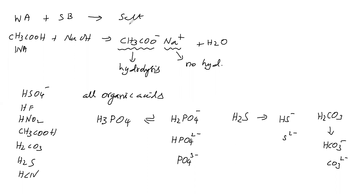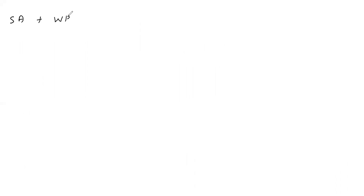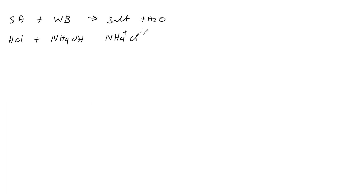This type of salt — from weak acid and strong base — has only anionic hydrolysis. Next type: strong acid plus weak base, for example HCl (strong acid) plus ammonium hydroxide (weak base), giving ammonium chloride. In this salt, the ammonium ion NH₄⁺ is from weak base ammonium hydroxide, so it can undergo hydrolysis. The anion Cl⁻ is from strong acid, so it does not undergo hydrolysis. Therefore, in this salt, only cationic hydrolysis takes place.